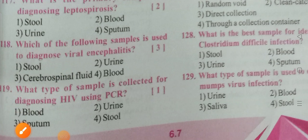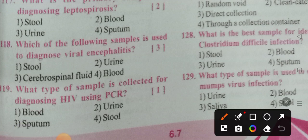Which sample is used to diagnose viral encephalitis? Options: stool, urine, cerebrospinal fluid, blood. Option 3 is the correct answer: cerebrospinal fluid. What type of sample is collected for diagnosing HIV using PCR? Options: stool, blood, urine. Option 1 is the correct answer: blood.